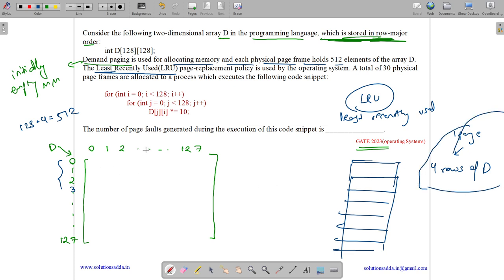Now let us see what happens when we run this code. For int i equals 0, i is less than 128, i plus plus. For int j equals 0, j is less than 128, j plus plus. D[j][i] equals D[j][i] into 10. Here it is stored in row major order, but the access is in column major order. How do I know this?